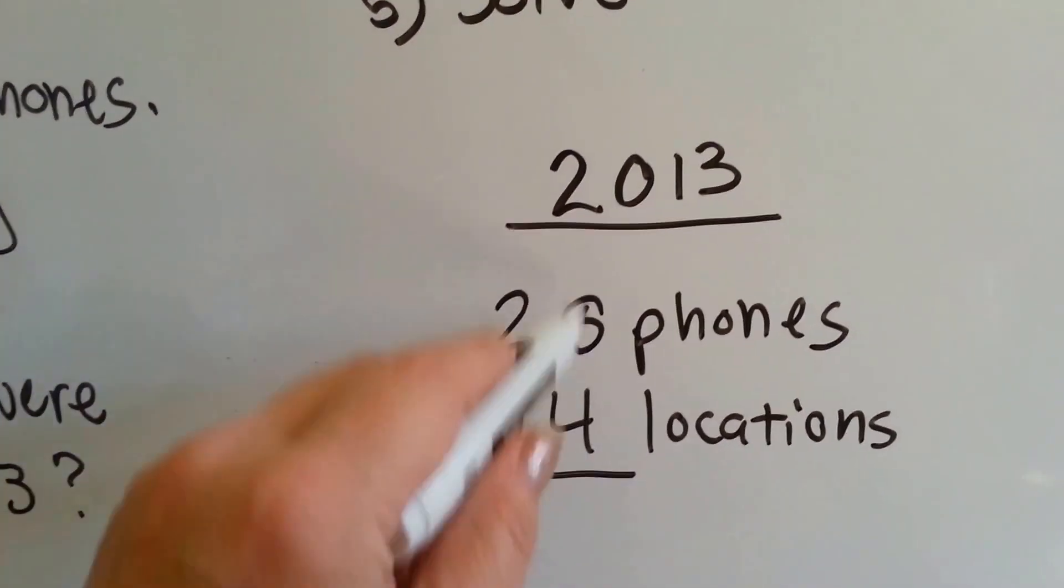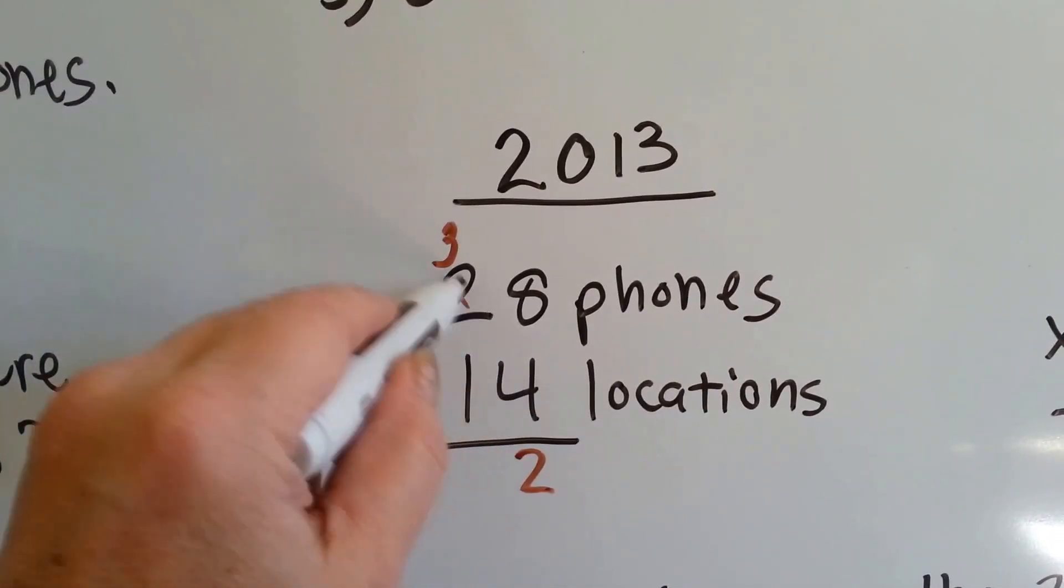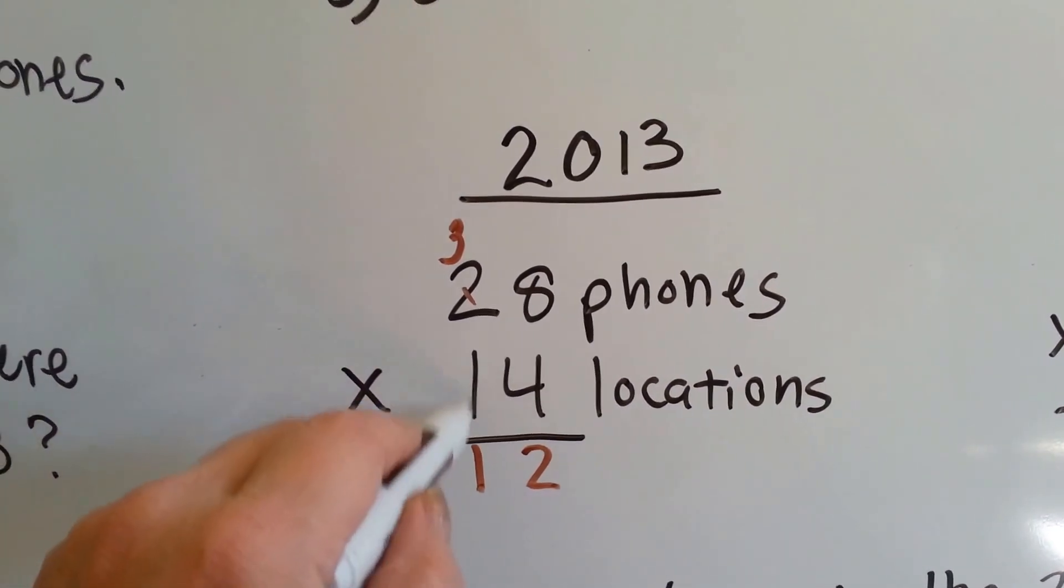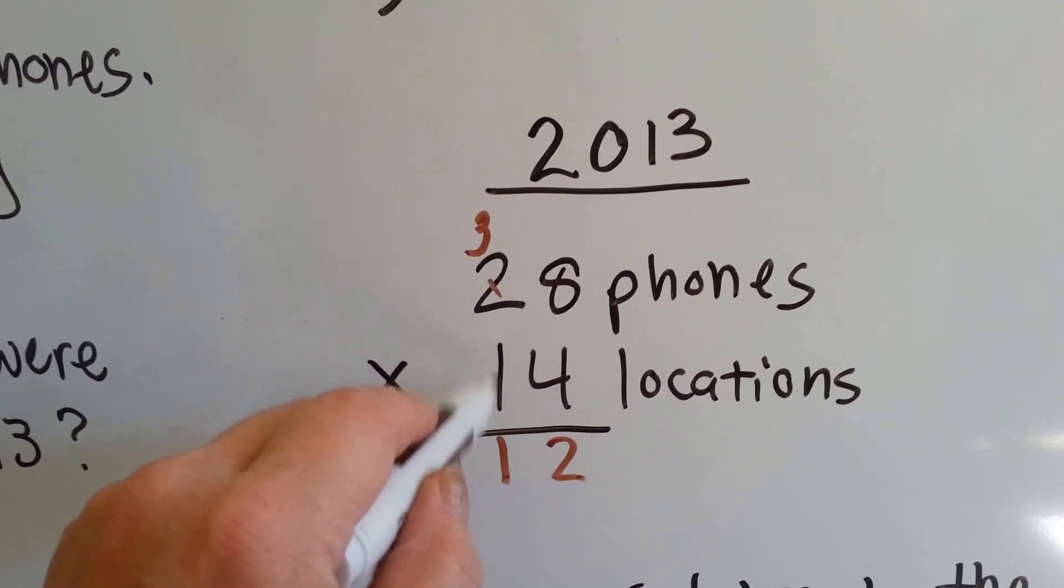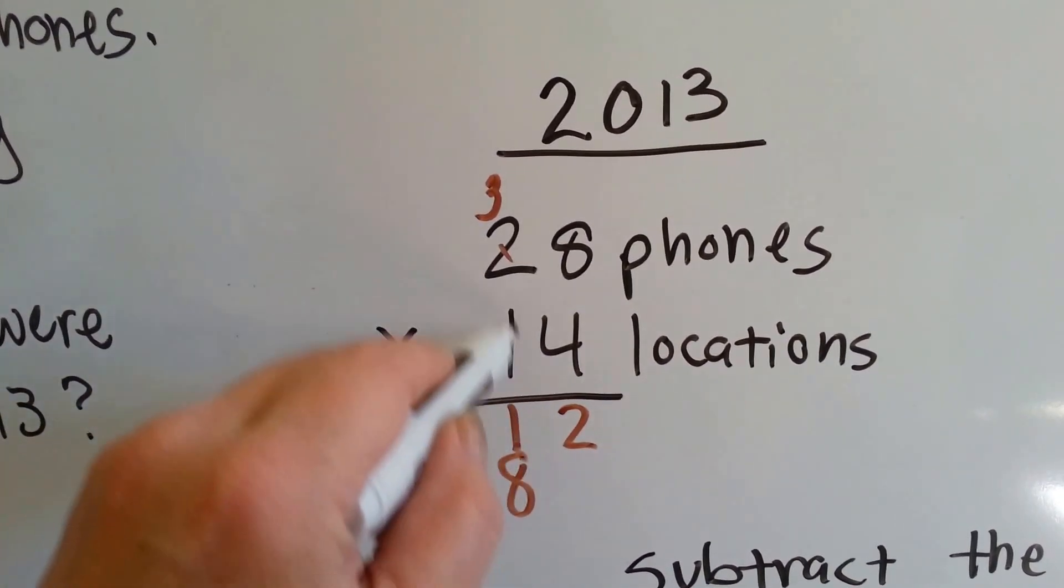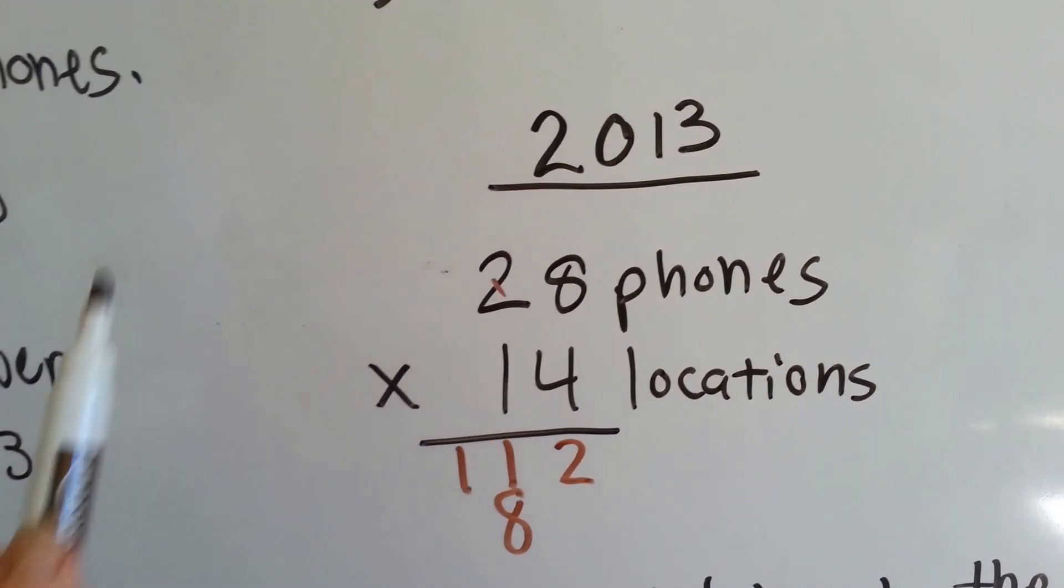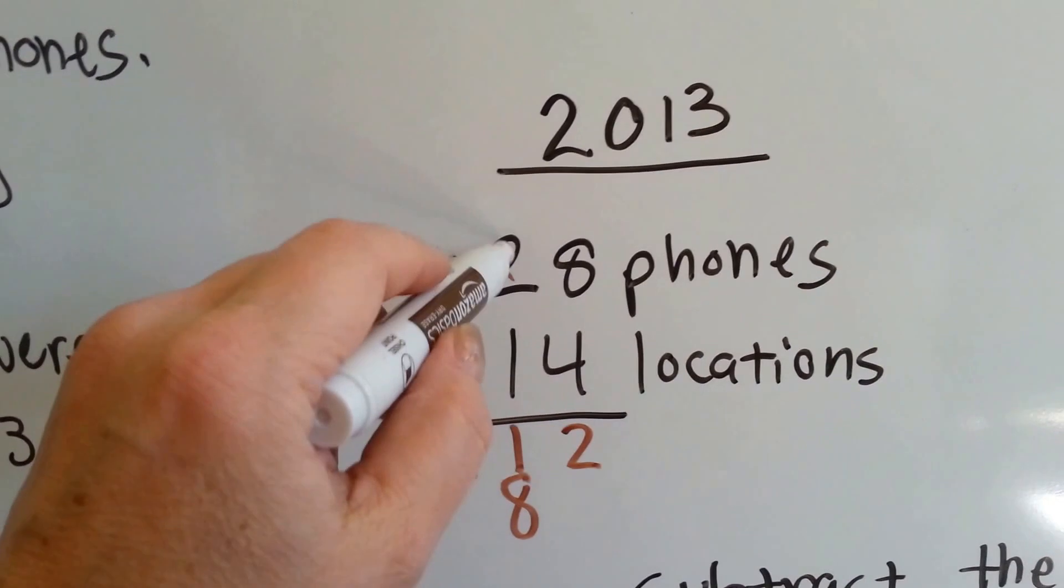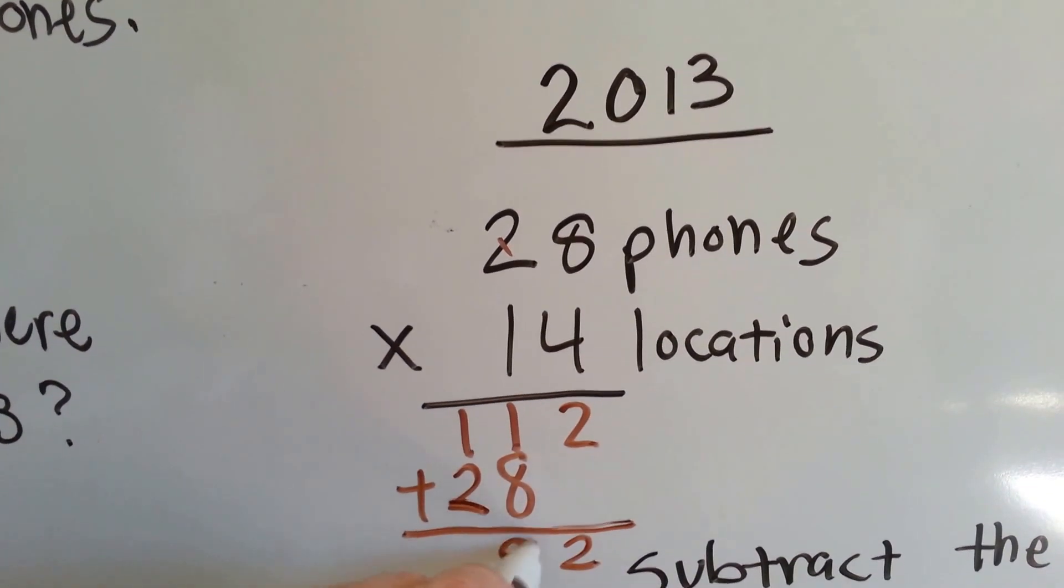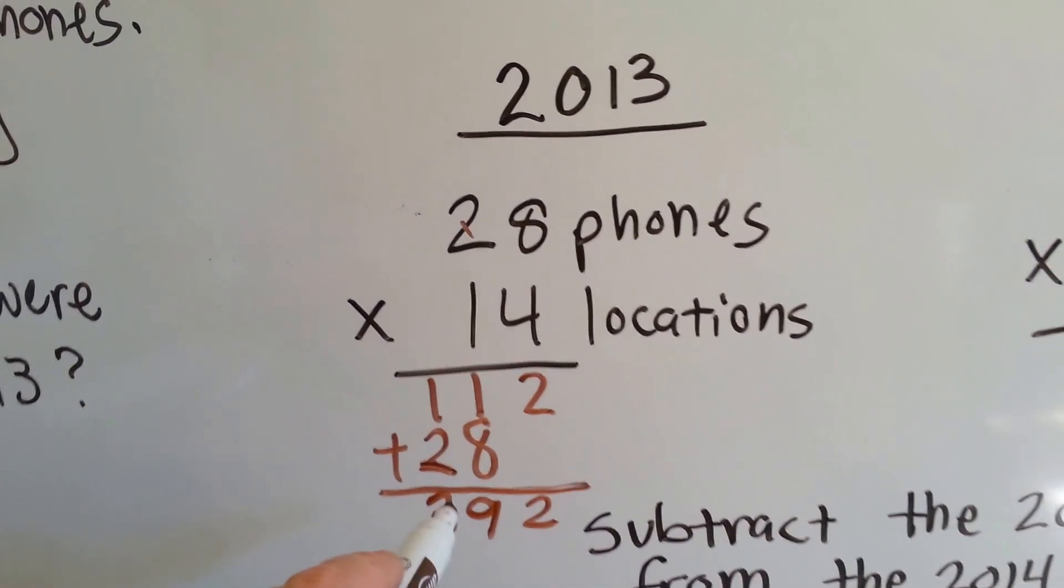4 times 8 is 32. We carry the 3 and put the 2 down. 4 times 2 is 8, 9, 10, 11. We put that here. Now it's time to do the ones over here in the tens place. 1 times 8 is 8. It goes here because we're multiplying the tens place. We have to get rid of this carryover because that was from the ones. 1 times 2 is 2. We add these up and we get 2 and a 9 and a 3. So in 2013, she sold 392 phones.